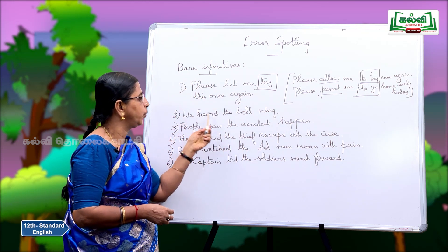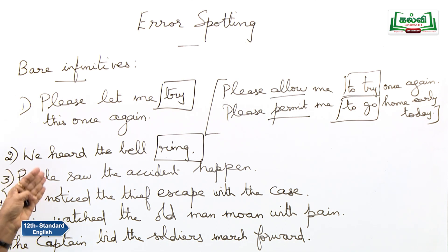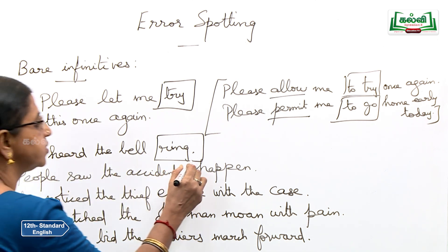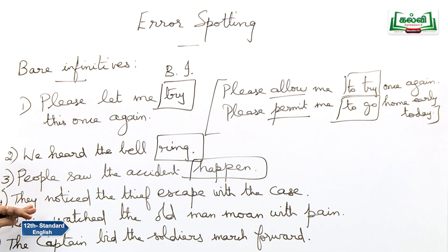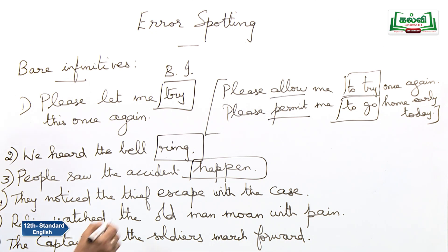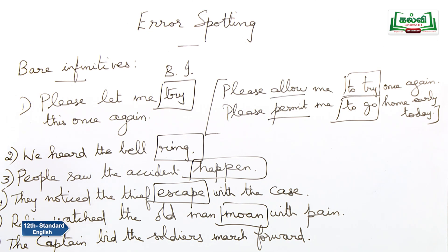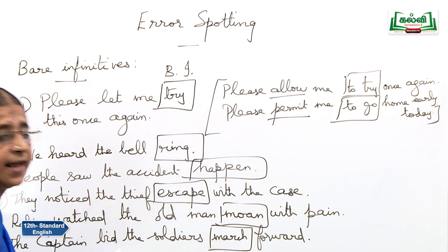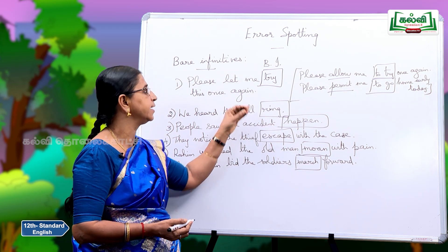We heard the bell ring — you don't say 'to ring.' People saw the accident happen — you don't say 'to happen.' They noticed the thief escape with the jewels. Rahim watched the old man moan with pain — it is a bare infinitive, not 'to moan.' The captain bid the soldiers march forward — again, the bare infinitive. You don't say 'to march,' 'to moan,' 'to escape,' 'to happen,' 'to ring,' or 'to try.' Once you understand this procedure, you will never commit mistakes.